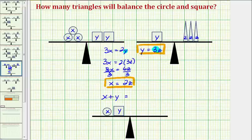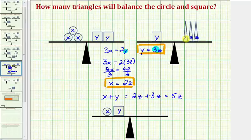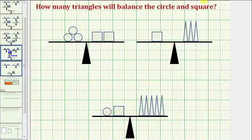then we know that x plus y would have to be equal to 2z plus 3z, which equals 5z. Remember each triangle is represented by z, and therefore since x plus y equals 5z, one circle and one square is equal to five triangles, as we see here.